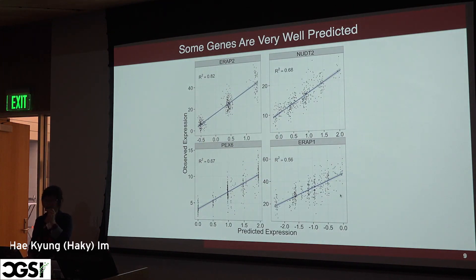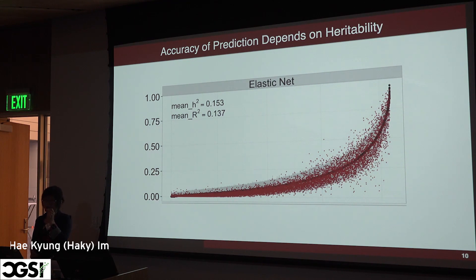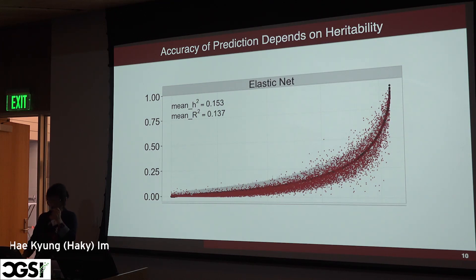How well do we predict expression levels? Here are four cherry-picked genes — ERAP2, NAZI2, PEG6, and ERAP1 — that are rather well predicted. The x-axis is predicted expression level, the y-axis is observed expression level, and you can see the R-squares are pretty high. More generally, for about 13,000 protein-coding genes we estimate heritability of gene expression levels: highly heritable genes tend to be predicted well, and genes with low heritability expression are not predicted well, as expected — you cannot use genotype to predict something that is not heritable.